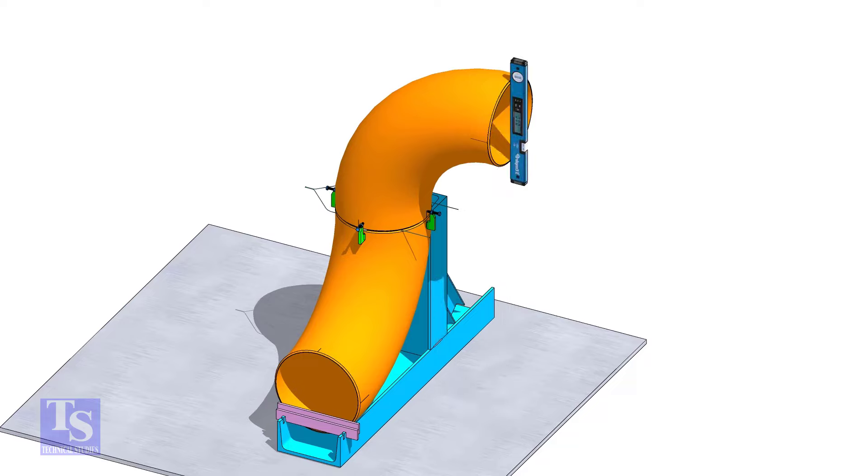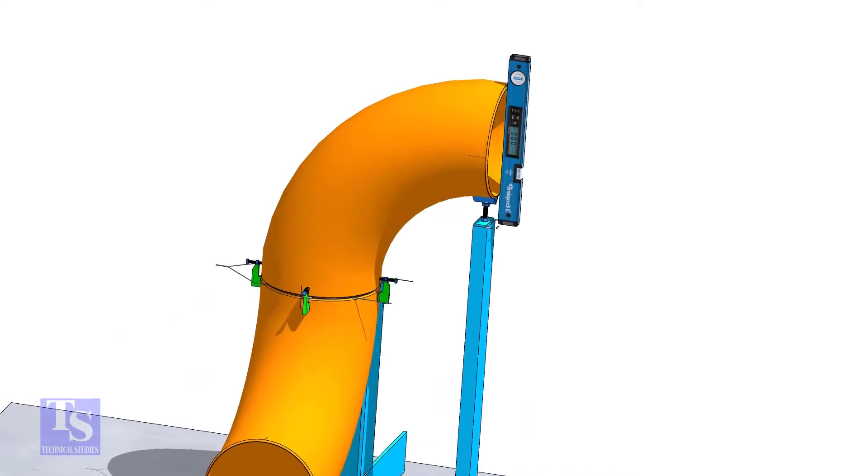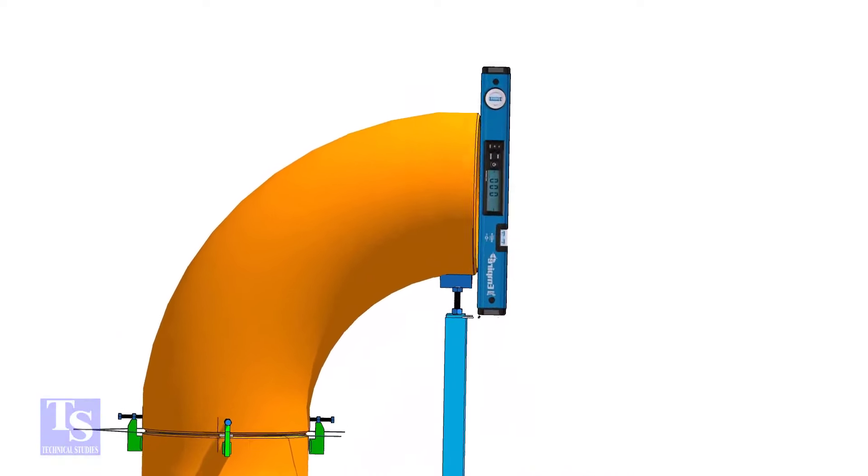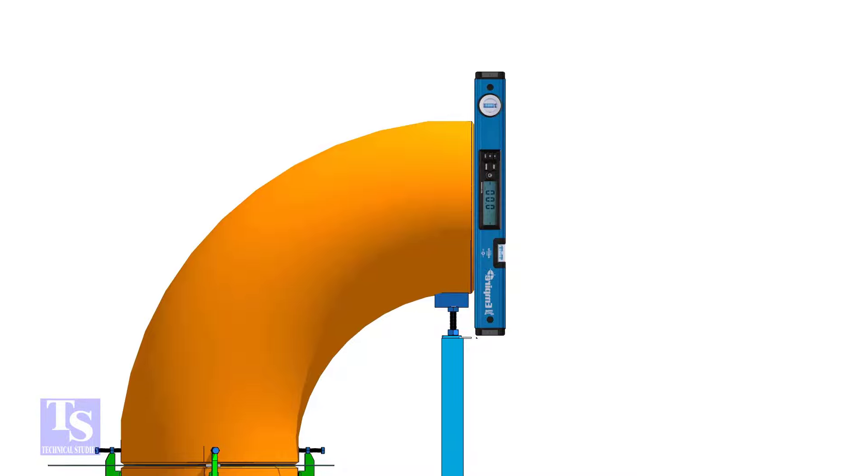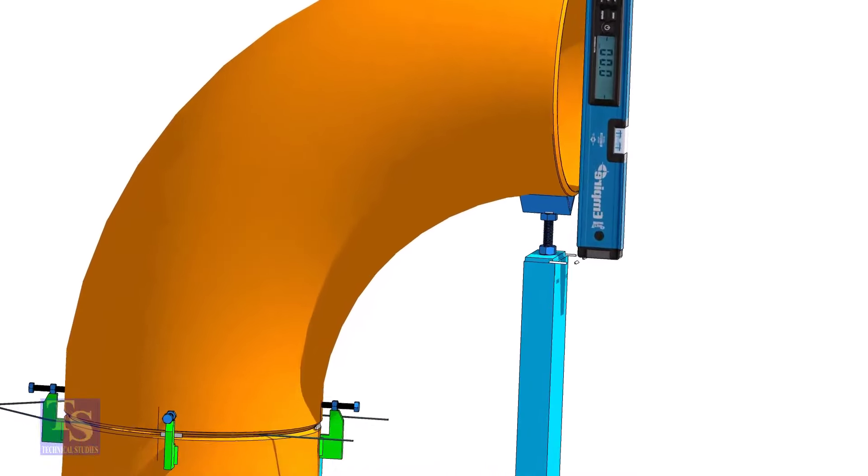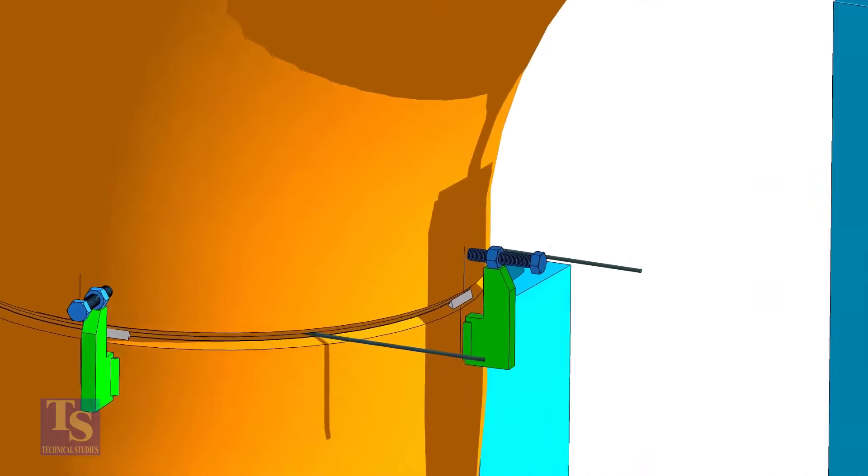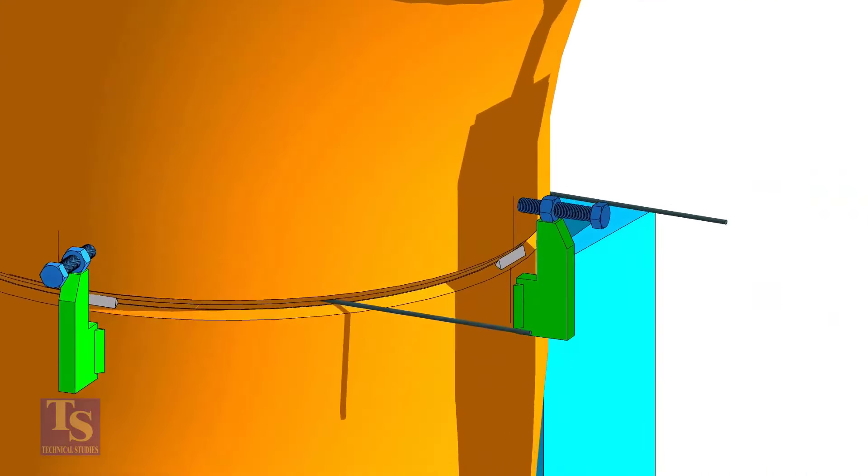Check the verticality of the elbow face. Tack weld on this side and the back side of the elbow.